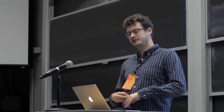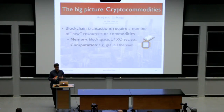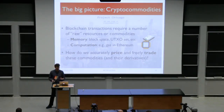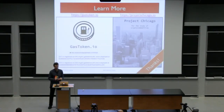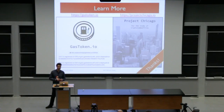As promised, there's a bigger picture here which we also have a website for. We're thinking about what we call crypto commodities - raw resources used in blockchain transactions, such as memory, block space, and computation. The general question is how do we accurately price and yet freely trade these commodities. In the interest of time I'll skip this part, but you can read more on our project Chicago website about other ideas we have in this space, including futures on gas transactions. You can go to these two websites to learn more, and I'm happy to chat offline if you have further questions. Thank you.